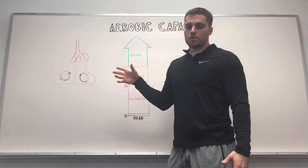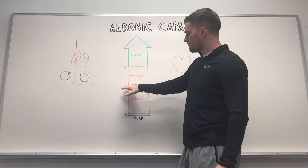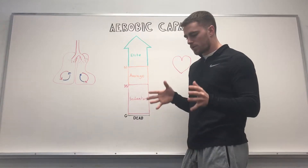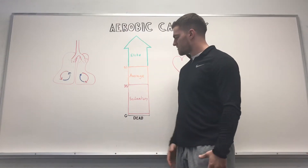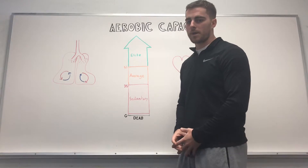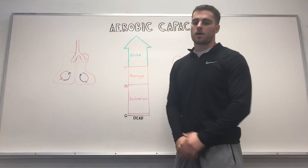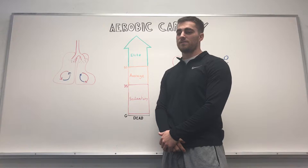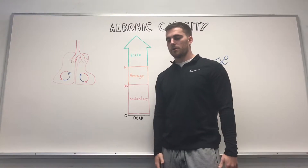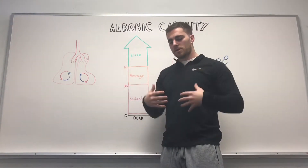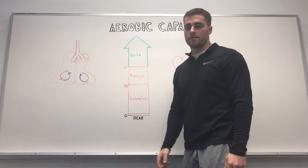VO2 max is our gold standard measurement for aerobic capacity. Anywhere from 0 to 35 — these are general numbers — is more of our sedentary population, people not participating in aerobic training very often. Anywhere from 35 to 55 is pretty average and good aerobic capacity. 55 and above is considered elite. A little random factoid: the highest recorded VO2 max is about 94 milliliters per kilogram per minute, which measures the amount of air you're exchanging based on body weight per minute. Obviously if you have a zero aerobic capacity, you are dead — so we're trying to avoid that.